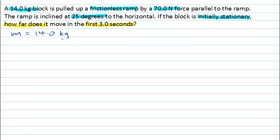the mass is 14 kilograms, and we know it's being pulled up the incline. We'll call that Fp for the pulling force, with a 70 Newton force. We know the ramp is inclined at an angle of 25 degrees. We're also told the block is not moving initially, so its initial velocity is 0 metres per second. We want to know how far it's moved in the first three seconds, and so the information that we're really trying to calculate is this change in displacement here, which we don't know.